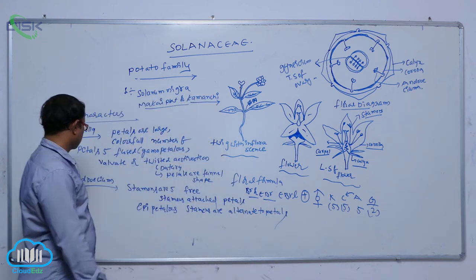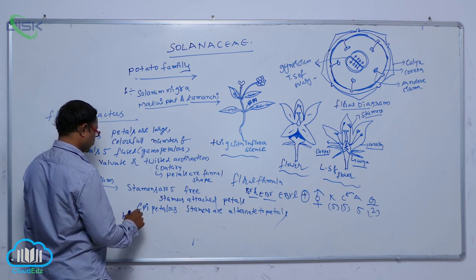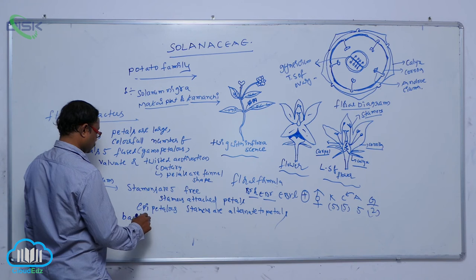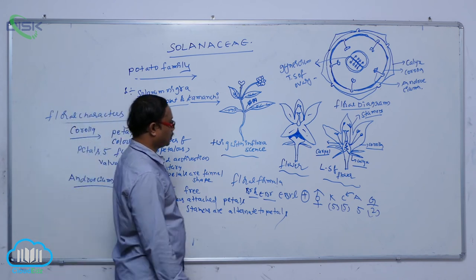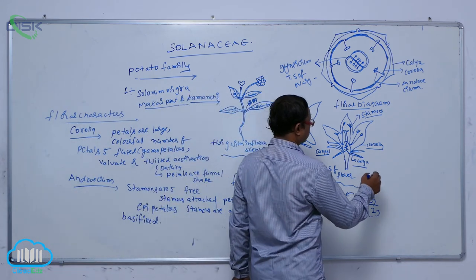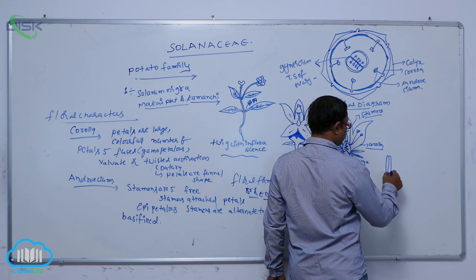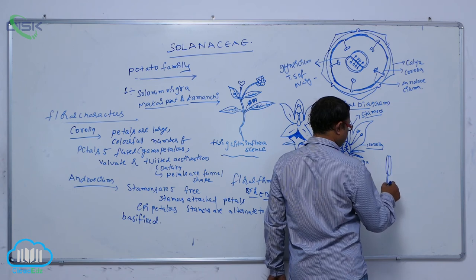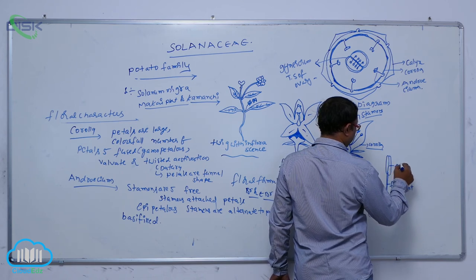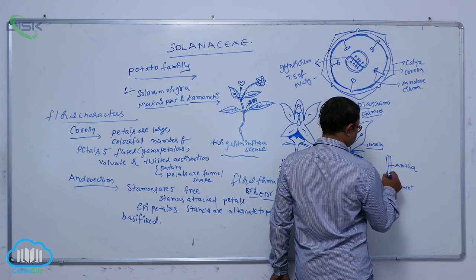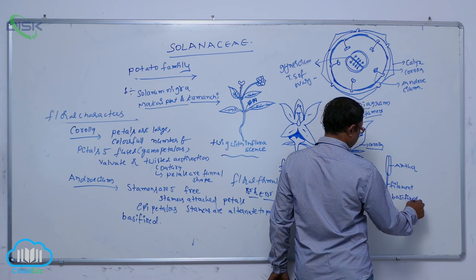The base is affixed, meaning the anther is attached at the base. For example, in base affixed condition, the anther is generally large in size in the Solanaceae family. The filament is attached to the anther at the base. This is known as base affixed.